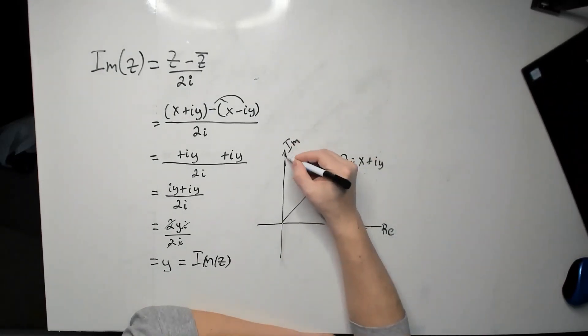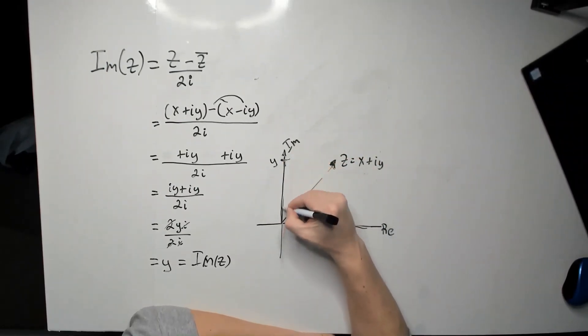Then the y part of that number, that would be right here. That's your imaginary part, right here. And that is what this allows you to find for a complex number z.